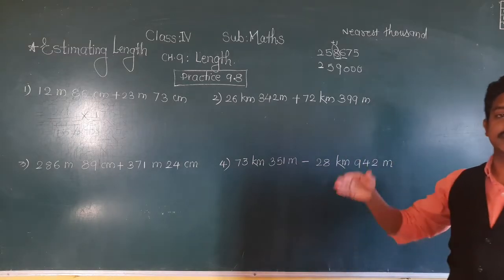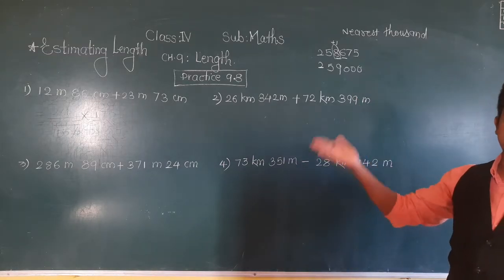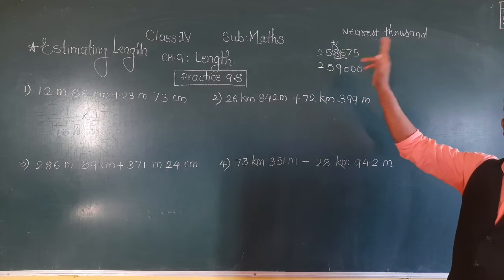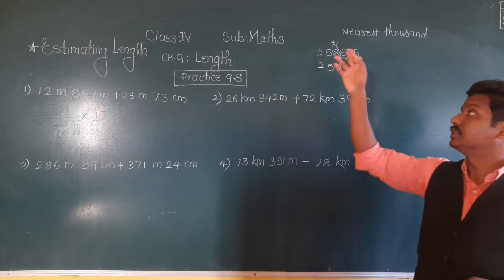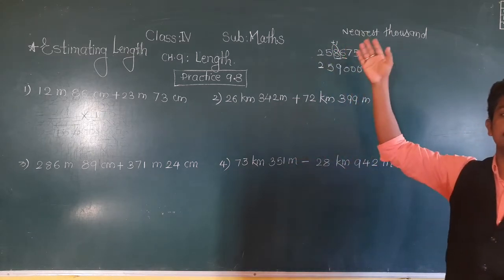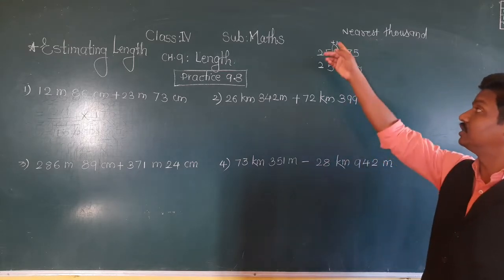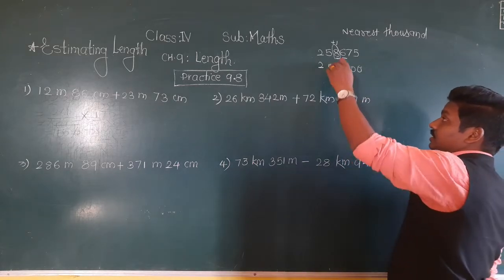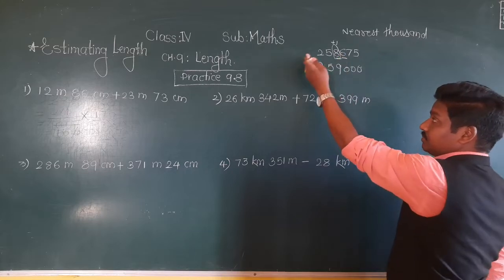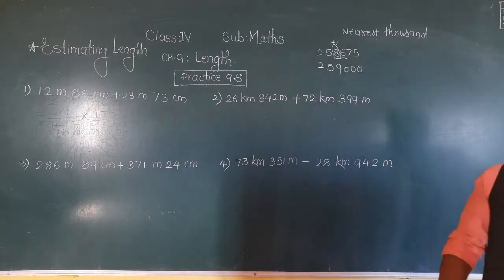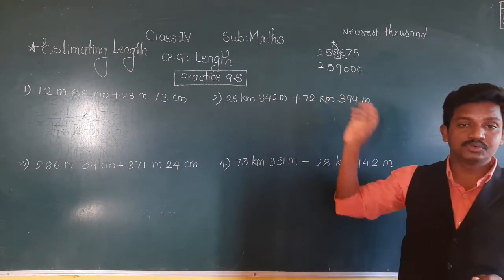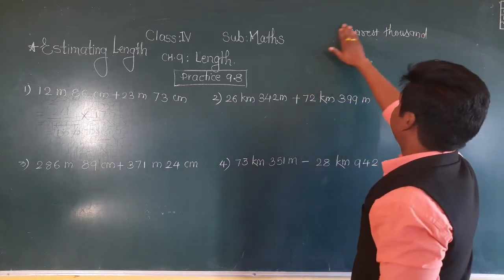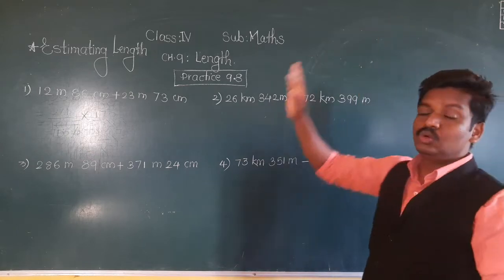Similarly, we can round off to the nearest tens, hundreds, thousands, ten thousands, lakh — whatever digit. We circle the digit we are rounding off, check the next digit. If the next digit is 0 to 4, take the circled digit as it is. If the next digit is 5 to 9, add 1 to the circled digit. Write digits before as they are, and replace digits after with zeros.